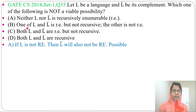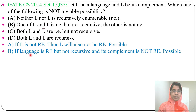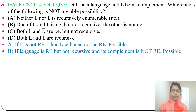Next, Option B: if a language is recursive enumerable but not recursive, and its complement is not recursive enumerable, this is possible. If L is recursive enumerable, then its complement is not recursive enumerable. So this is true.